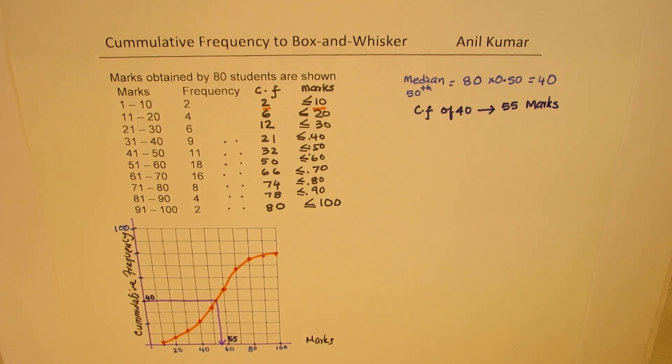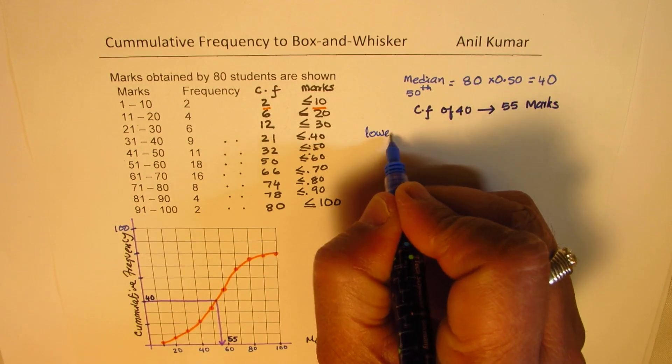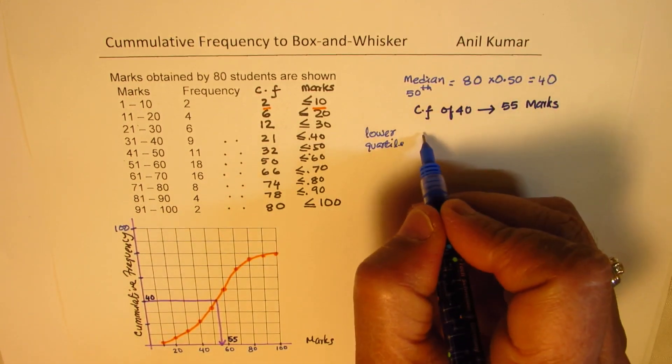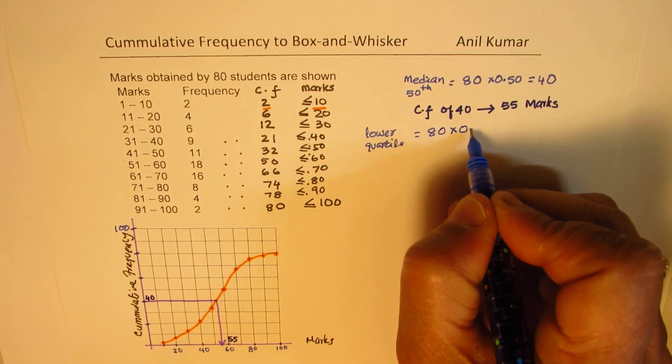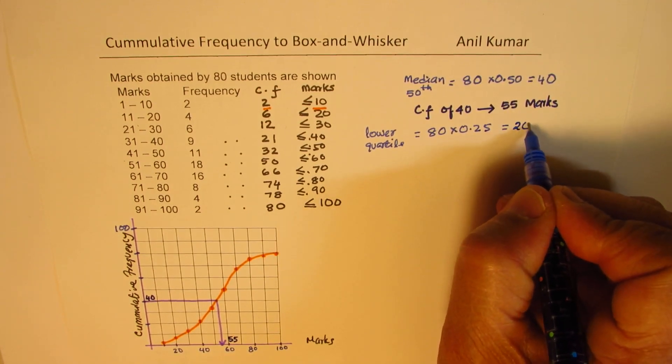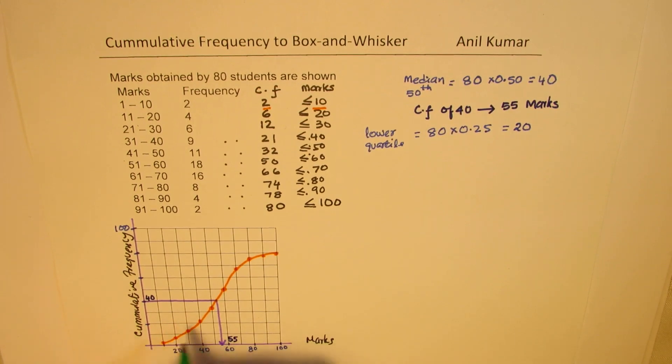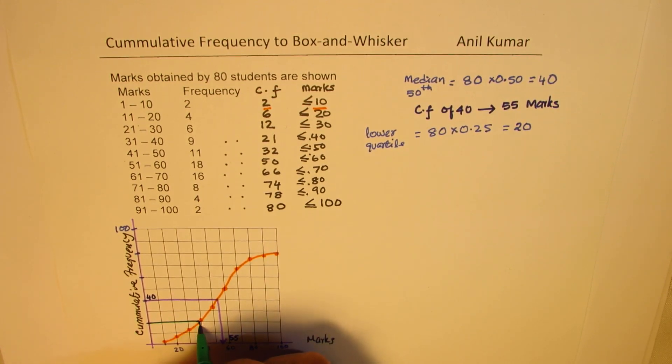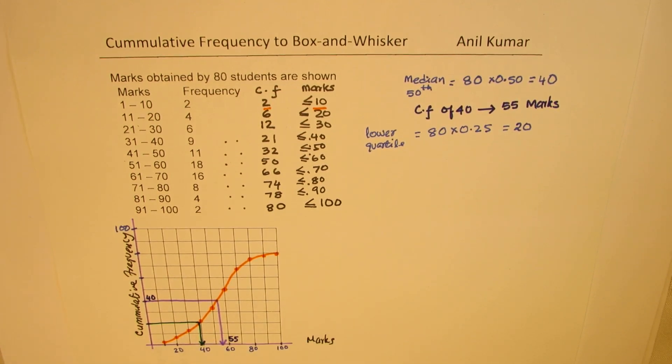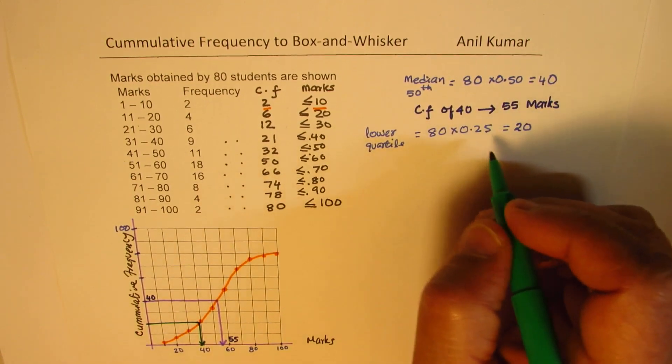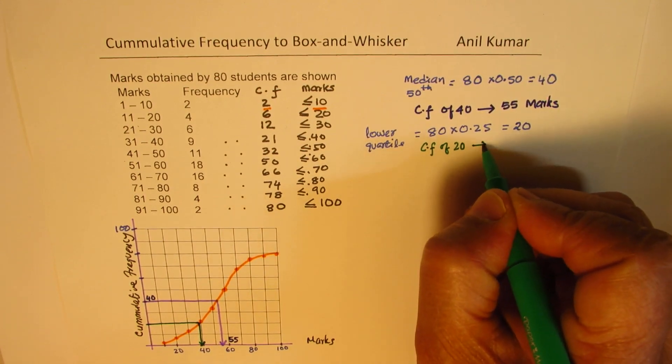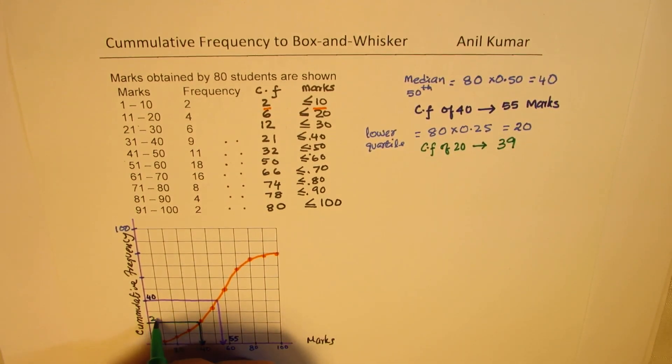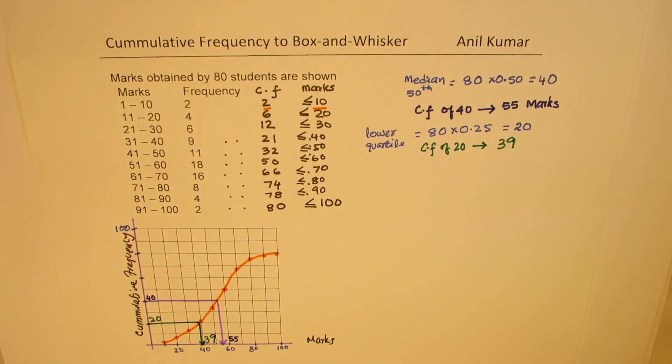And now, let's find the quartiles. The lower quartile is 25% mark. What is 25% of 80? So, we will be at 80 times 0.25, which is half of this, which is 20. So, now at 20, we will check the mark. So, at 20, it is kind of here. Slightly less than 40. So, we get this as, for the cumulative frequency of 20, the mark obtained is 39, as shown here in the diagram. This is for 20. And this we are reading as 39.